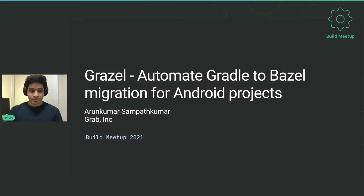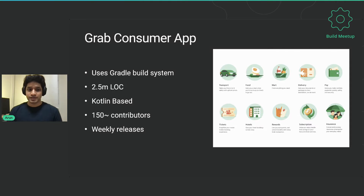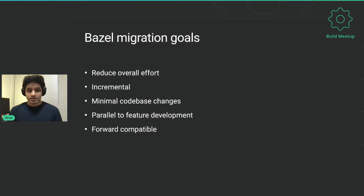A little about the consumer app we have: Grab's consumer app is a super app with different services like transport, food delivery, pay, etc. We have different tech families working on it, reaching millions of users every day, primarily in Southeast Asian markets. We were growing steadily and currently use the Gradle build system. Our codebase is around 2.5 million lines of code, we have around 150 contributors landing a couple hundred commits every day, and we release updates to the Play Store weekly. We were very interested in Bazel's capabilities like remote execution, better parallelization per module, and remote caching.